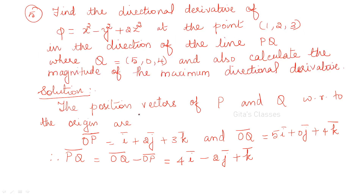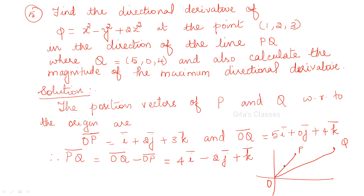Find the directional derivative of a similar problem. Here, instead of giving the direction directly as a vector, they give the direction of the line PQ, where P and Q are given points. Using vector properties, PQ = OQ − OP. If P = (1, 2, 3), then OP = i + 2j + 3k. If Q = (5, 0, 4), then OQ = 5i + 0j + 4k. So PQ = OQ − OP = 4i − 2j + k.